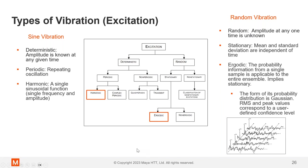To talk a little bit about random and sine vibration theory and how this ties into the toolkit, I want to talk first about the types of vibration that we're discussing here today. So sine vibration, that's a deterministic vibration. That means the amplitude is known at any given time. It's periodic. So it's repeating and it's a single sinusoidal function. Sine vibration, just think of a sine wave.